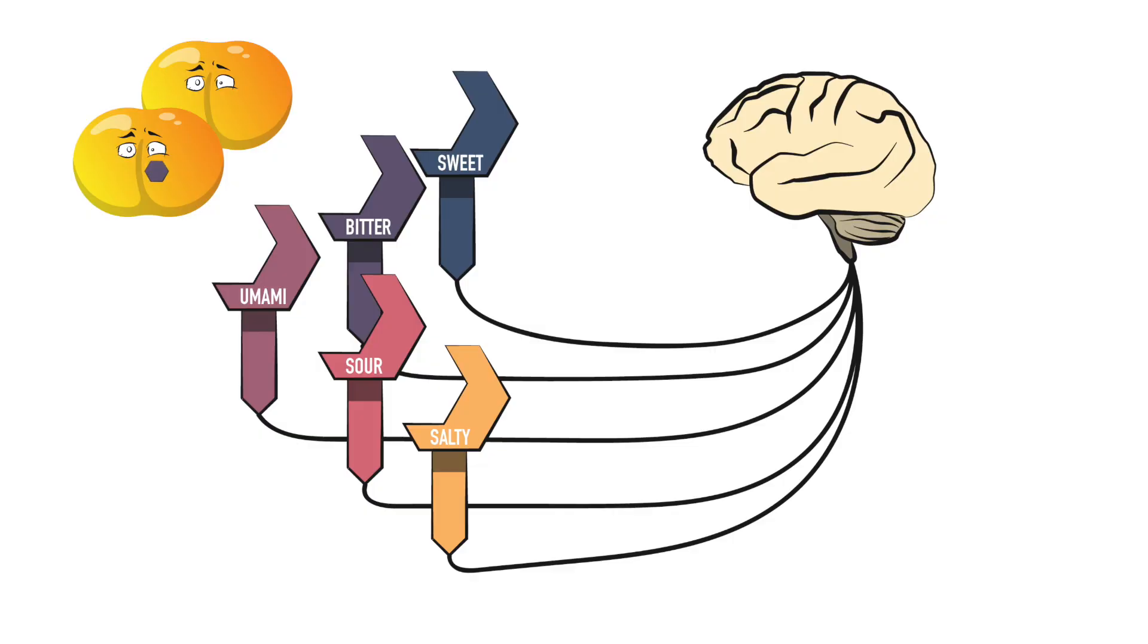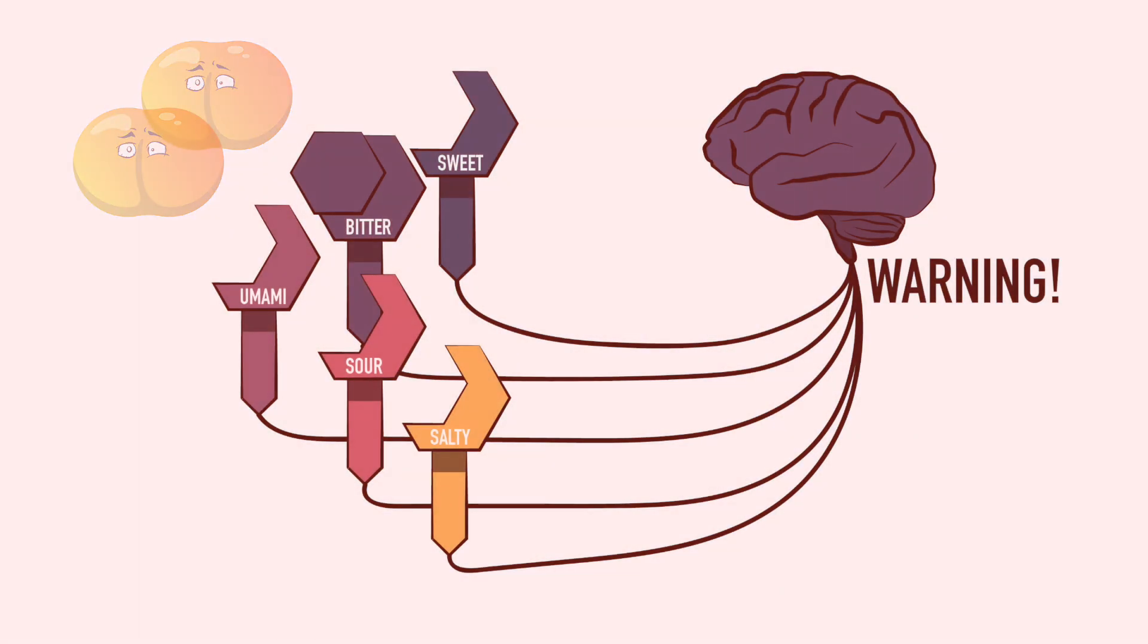It's thought the bitter receptors in our lungs sense bacteria and sound the alarm before those bacteria can cause lung infections. So back to veggies.